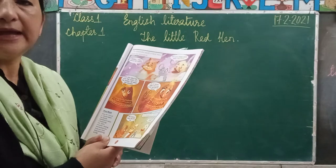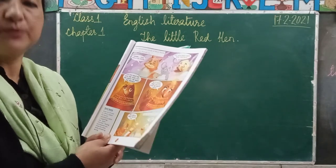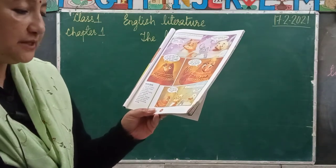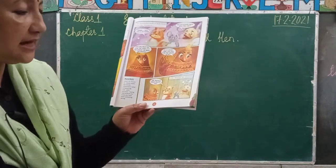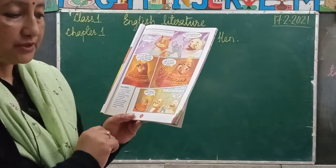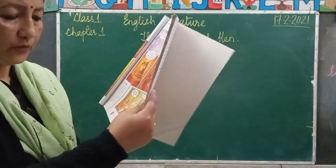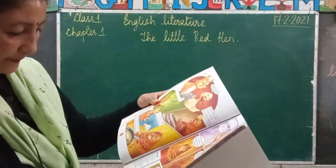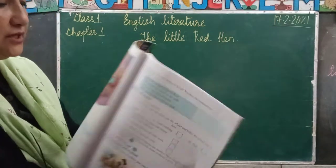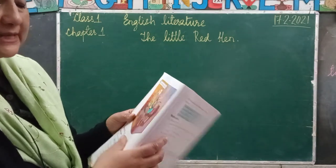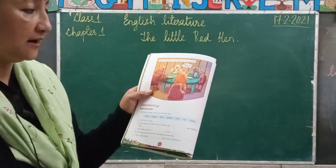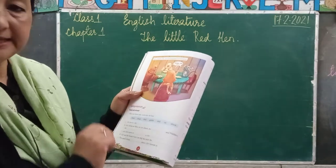Lily is angry now. Lily says: when I wanted help, did you help me to sow the seed, cut the wheat or bake the bread? Is it right for you to ask for a piece of bread now? They realized and said: we should have helped you. Lily's friends are ashamed. Ashamed is feeling bad because you know you have done something wrong. They say: we are sorry, Lily. Lily is a very, very kind hen, so she invites everyone for dinner. Thank you, Lily! And all of them are having dinner now.